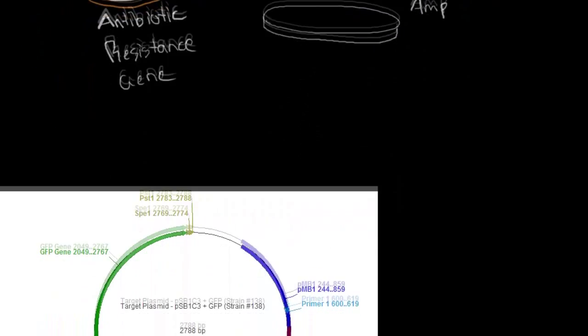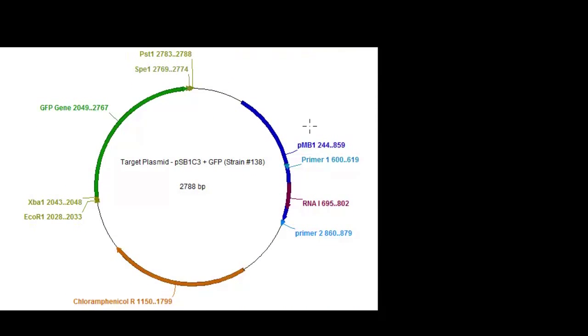So I'm actually going to slide down and show you a real plasmid. This is something that I work with myself. And you can see here it's got a lot of the same features. In fact they're all the same. This blue portion here is an origin of replication. Specifically an origin called PMB1.